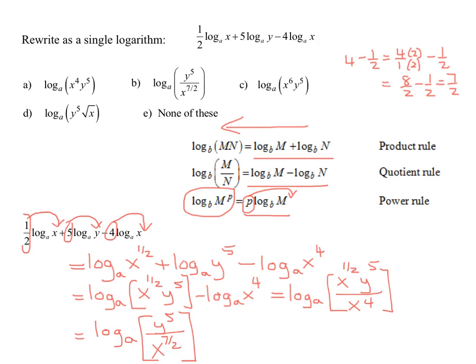And is it one of the answers up here? Well, I definitely have log to the base a of a quotient, which kind of rules out a, c, and d. And is it the answer b? Log to the base a of y to the 5th over x to the 7 halves. Is that what I got? Yes. So my answer is b.